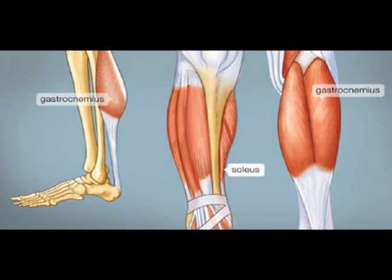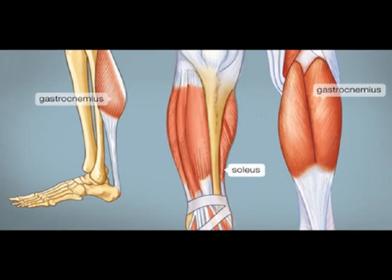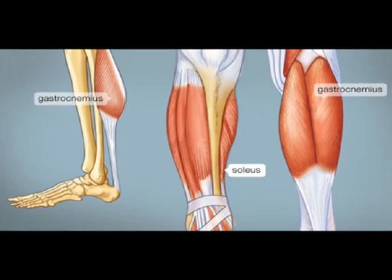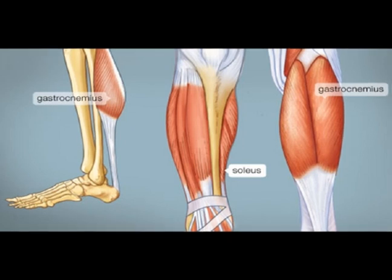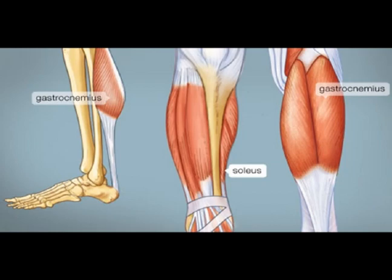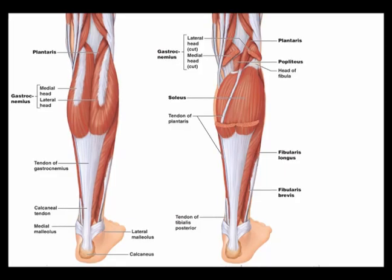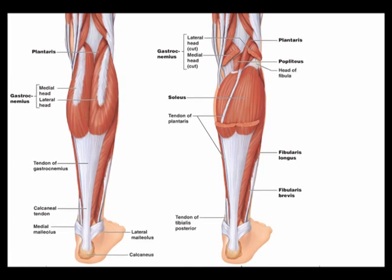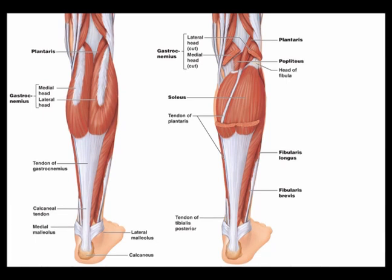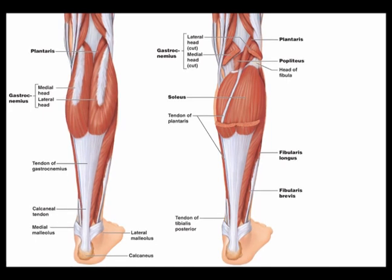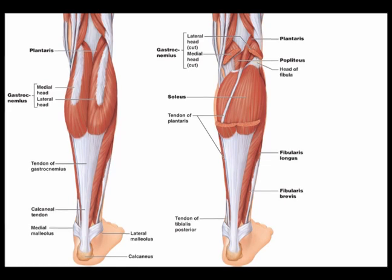Compartment syndrome occurs when the tissue pressure within a given compartment exceeds the pressure of the arterial supply, resulting in ischemia to the muscles and nerves of the compartment. The etiology is varied, but most commonly it is related to an acute trauma or an overuse injury. In the lower leg, this can occur in any of the four compartments: the anterior compartment, lateral compartment, superficial posterior compartment, or deep posterior compartment. Trauma is the most common etiology of compartment syndrome, and other causes of anterior leg compartment syndrome can vary widely. Compartment syndrome results from increased compartment pressure.